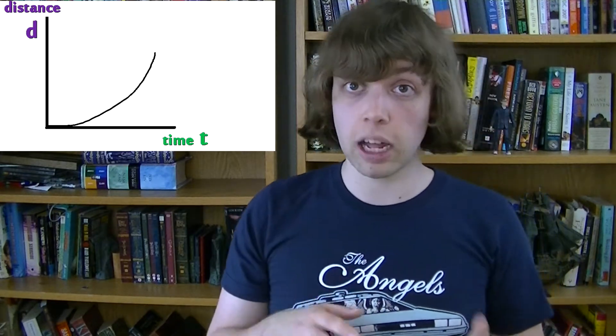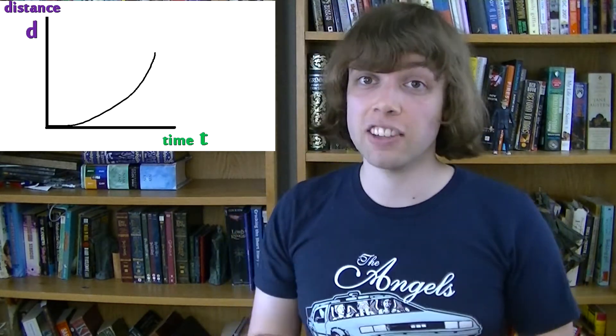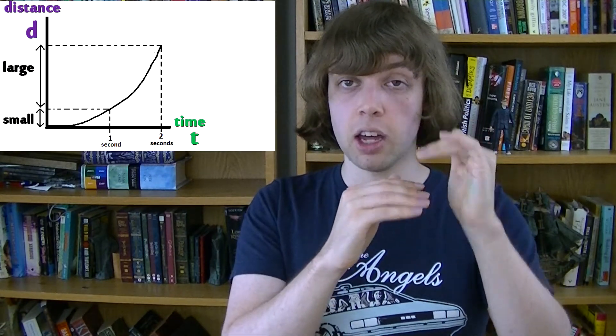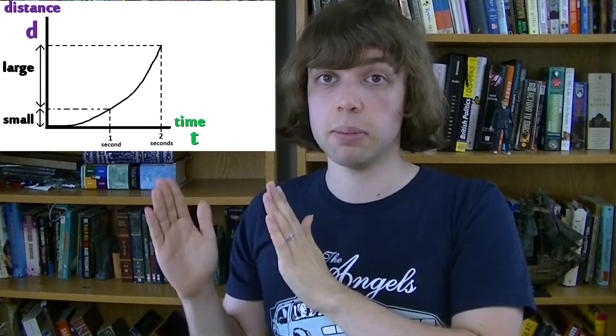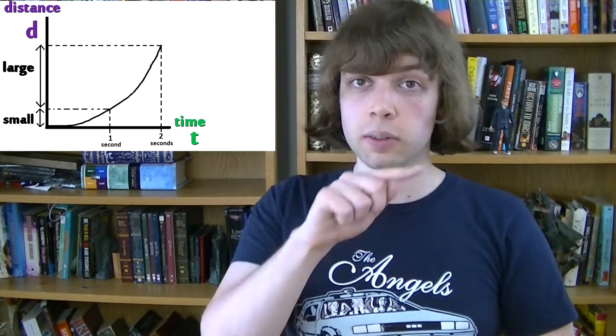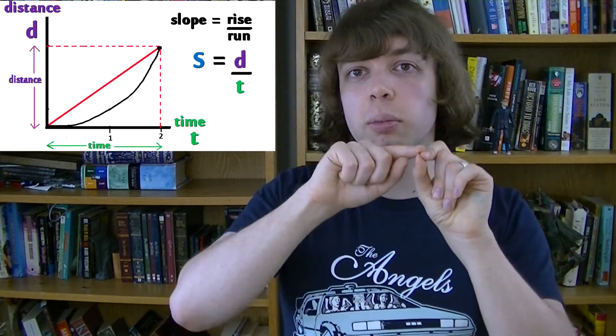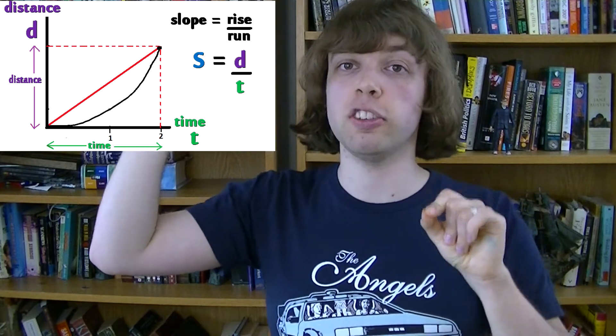You start off not moving at the traffic light, and you get faster and faster. At first you move a small distance in a particular period of time, but then later you move a bigger distance in the same period of time. So you get a curve like this. Your average speed would just be your total distance over your total time. It's like taking an imaginary line from start to finish and finding the slope of that line.